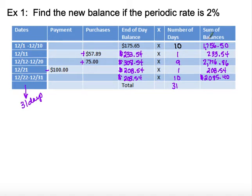Now we take the sum of our balances for all these days and add them together. That gives us a total of $7,060.84.